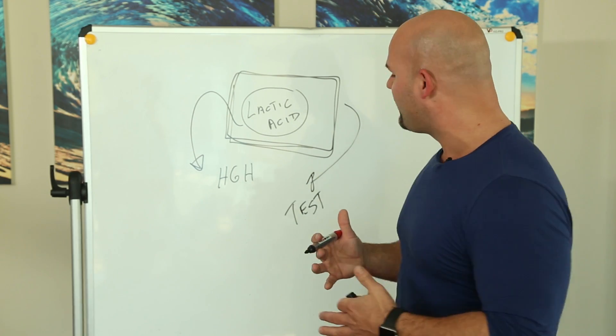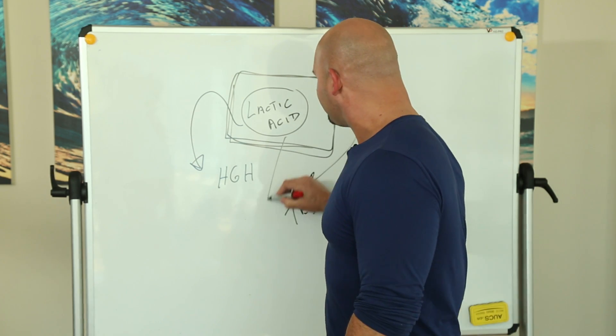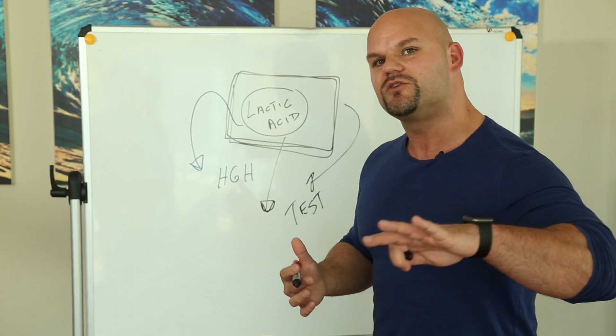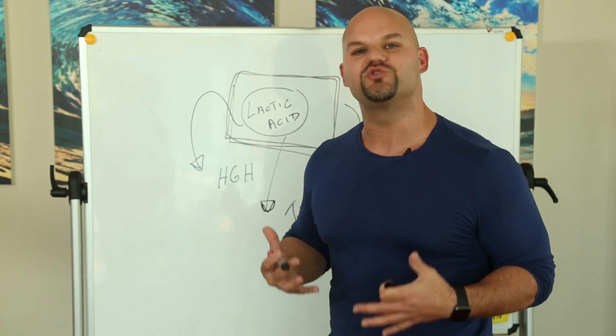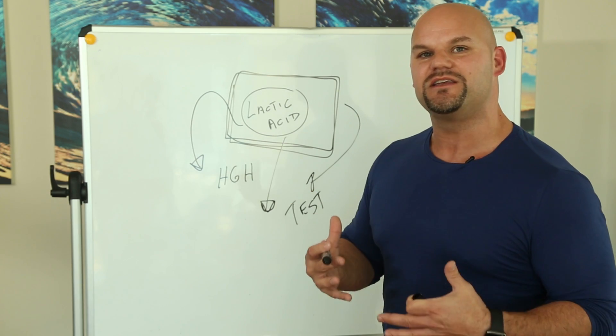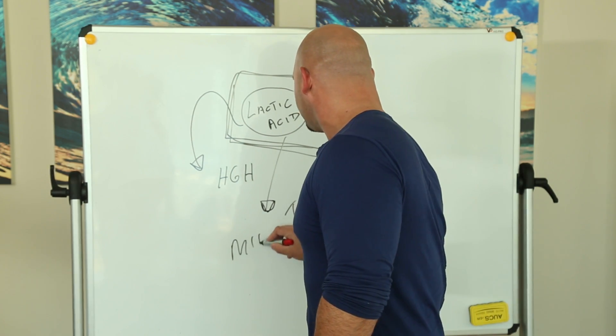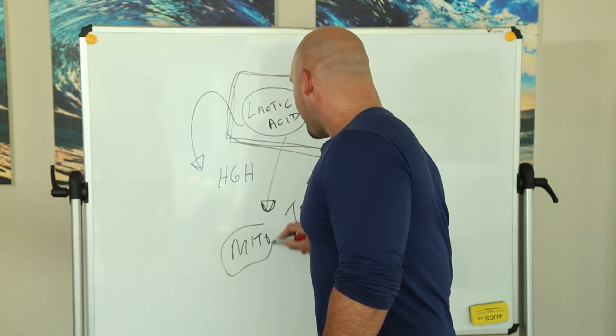And the final thing that lactic acid does is it turns on your metabolic machinery. Each one of your cells has little mitochondria in them. These are fat burning factories in your cell that ramp up fat burning. Lactic acid stimulates the production of the mitochondria.